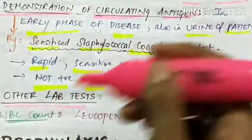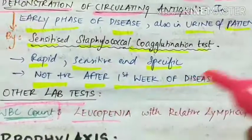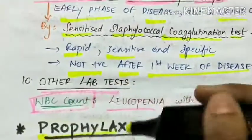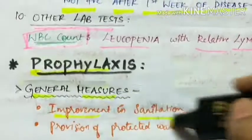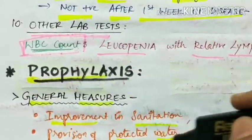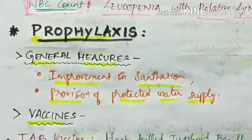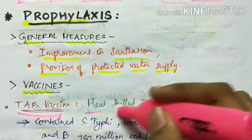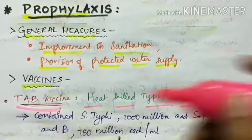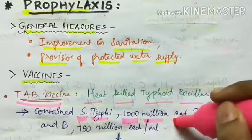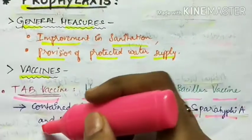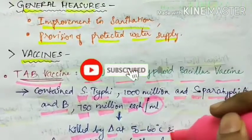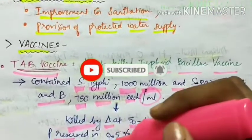Other lab tests include white blood cell count, which shows leukopenia with relative lymphocytosis. For prophylaxis, general measures include improvement in sanitation and provision of protected water supply. Different vaccines are available. First is the TAB vaccine, which contains heat-killed typhoid bacillus vaccine: Salmonella typhi 1000 million and Salmonella paratyphi A and B 750 million each per ml, killed by heating at 50 to 60 degrees Celsius and preserved in 0.5% phenol.